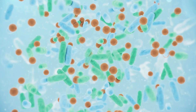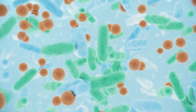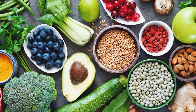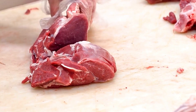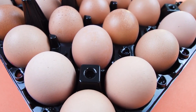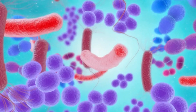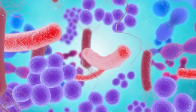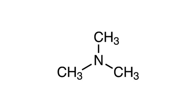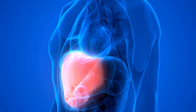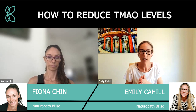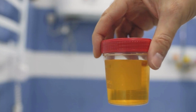So TMAO stands for trimethylamine N-oxide. It's a metabolite that's produced by our gut bacteria from certain foods — particularly foods that contain choline and carnitine, which are largely animal meats, dairy, and eggs. When we eat these foods, our gut bacteria breaks them down and releases something called TMA, trimethylamine. TMA then gets transported to the liver where it becomes oxidised into TMAO by a certain enzyme in the liver called FMO3, and then TMAO is excreted in urine from the body.